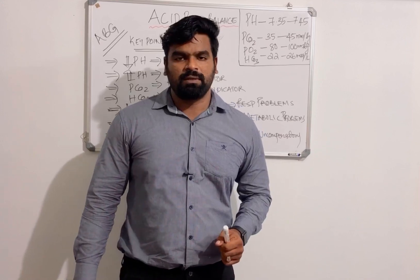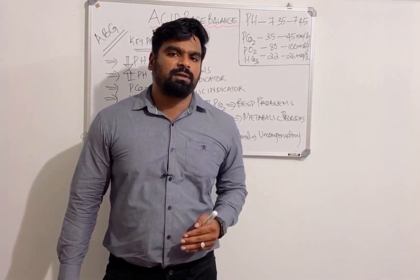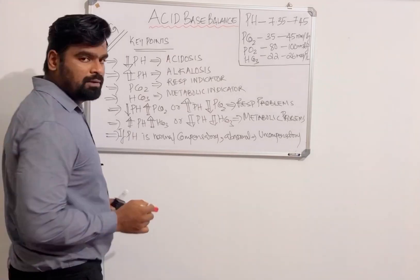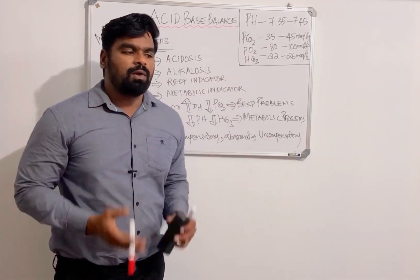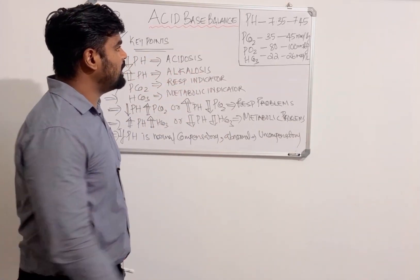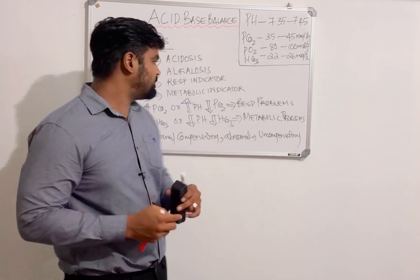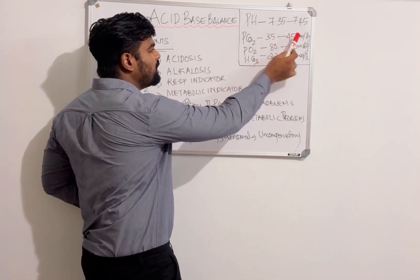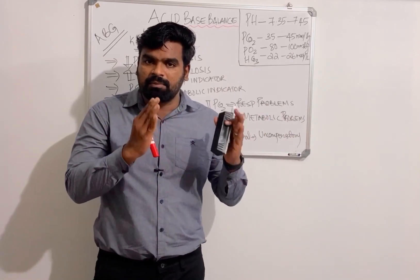Apart from normal values, you need to study key points to solve ABG calculations. First: if pH decreases, it is acidosis — if pH falls below 7.35, the patient is in acidosis. Second: if pH increases above 7.45, it is alkalosis. Third: pCO2 is a respiratory indicator — if pCO2 is outside 35 to 45 mmHg, the patient is having some respiratory problems.